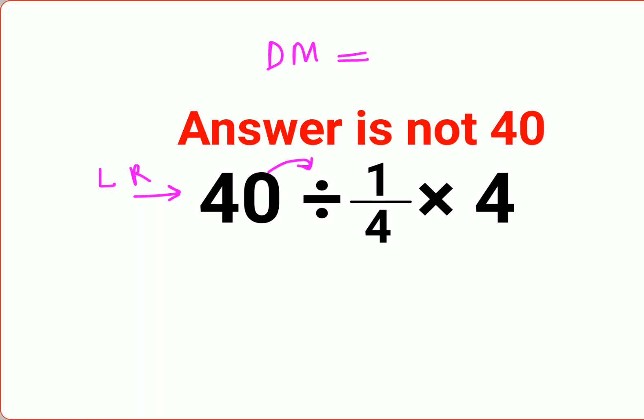If you see, the first operation is division. So for division you need to follow the rule of KCF, where K stands for keeping the first number as it is, and C stands for changing the division sign to multiplication.